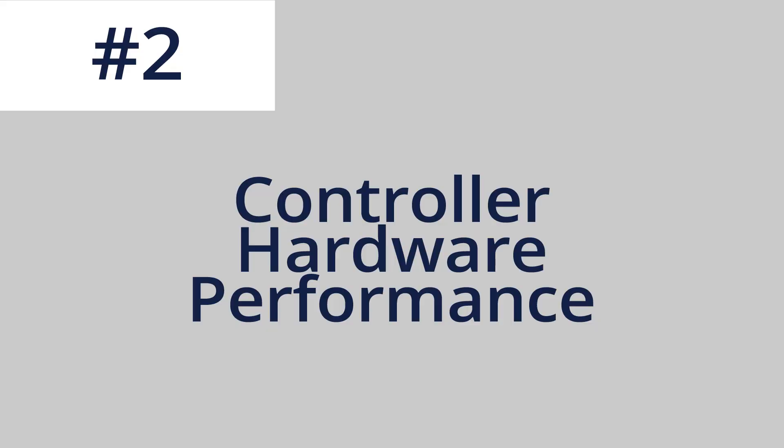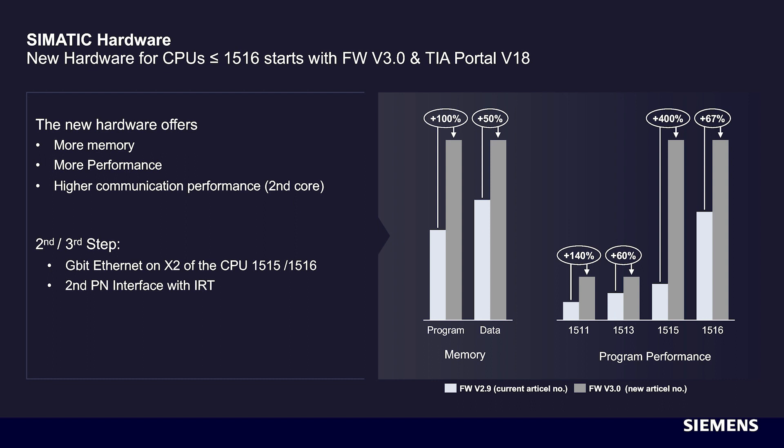The second thing I want to highlight is actually not software related — it's hardware related. Along with the version 18 software came firmware version 3.0 of the S7-1500 CPUs. This covers the 1516 CPU all the way down to the ET 200 SP CPUs, including the 1510 and 1512 CPUs. The big hardware innovation is they went from a single-core processor to a two-core processor.